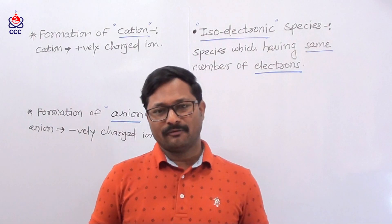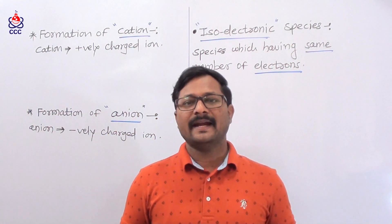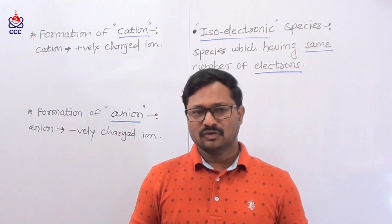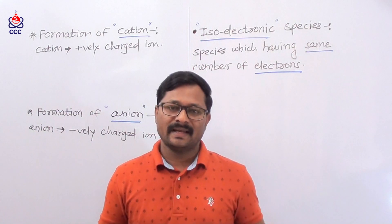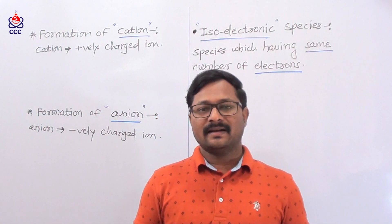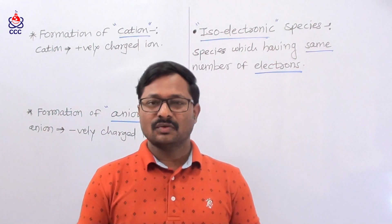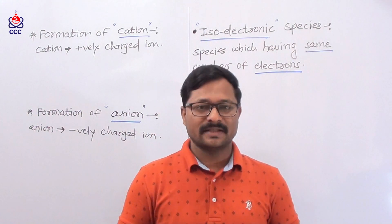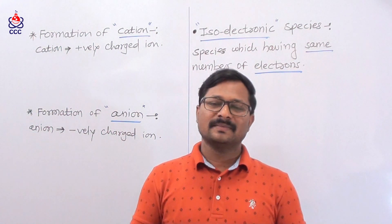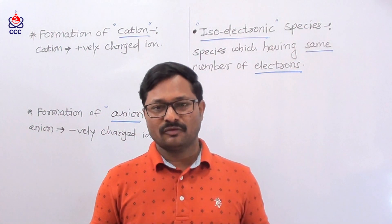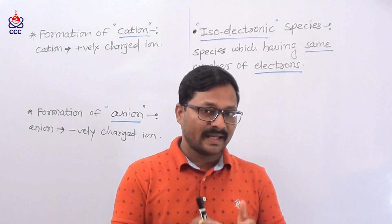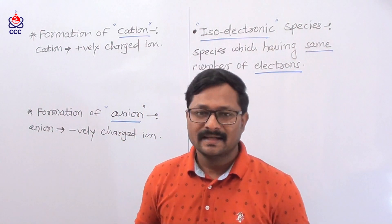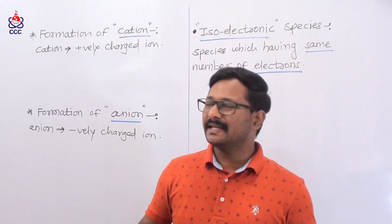In this lecture we are going to study formation of cation, formation of anion, and formation of isoelectronic species, and what is meant by isoelectronic species. Basically, what is meant by cation and what is meant by anion — previously in the ninth standard we already studied these concepts. In this lecture we are going to study these again along with the new concept of isoelectronic species.